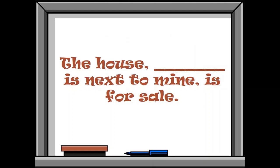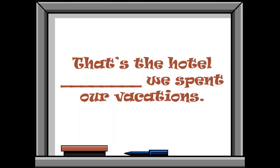The house dashes next to mine is for sale. Here, we are talking about house. House is people? It is included in persons? No. Then, it is a thing. Okay. For things, we use very good: which.